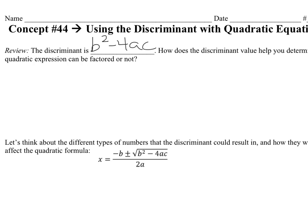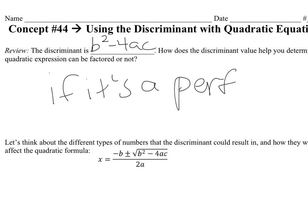We could tell if a quadratic expression was factorable if it's a perfect square. So how do we determine if it's a perfect square? If it's a perfect square, then you can factor it. Now let's think about all of the different types of numbers that the discriminant could result in, and let's look at where the discriminant is in the quadratic formula.